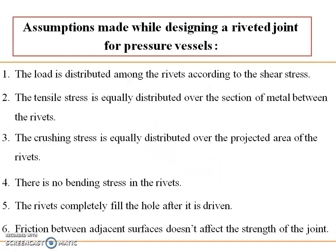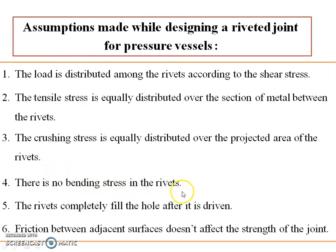Important assumptions made while designing riveted joints: the load is distributed among the rivets according to shear stress; tensile stress is equally distributed over the section of metal between the rivets; crushing stress is equally distributed over the projected area of the rivets; there is no bending stress in the rivet; the rivet completely fills the hole after it is driven; and friction between adjacent surfaces does not affect the strength of the joint.